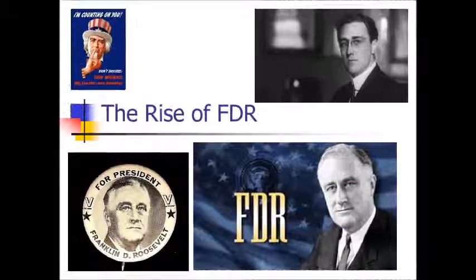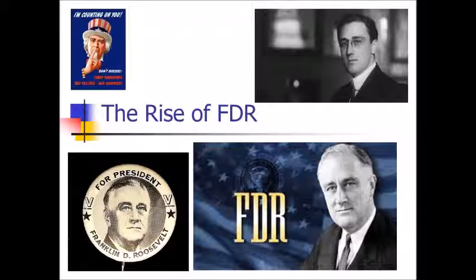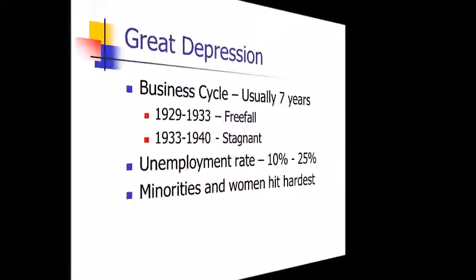We're talking about how Franklin Delano Roosevelt came to power. We call this first section the rise of FDR. You couldn't have had this guy Franklin Roosevelt without the Great Depression. So we're going to look at how the Great Depression happened and hopefully get as far as getting Franklin Roosevelt elected.